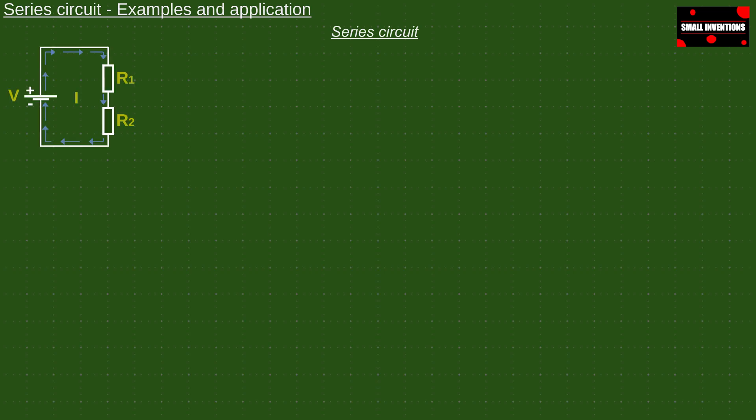The series circuit consists of a power supply and a minimum of two consumers, in our case two resistors.